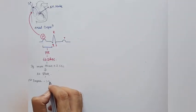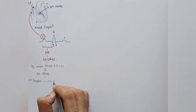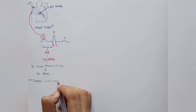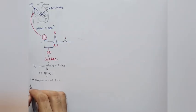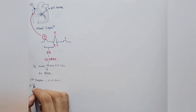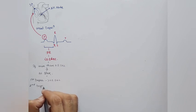In first degree heart block, the PR interval length is more than 0.2 seconds. In the ECG of first degree heart block, we can see that the PR interval is constant and is more than 0.2 seconds.